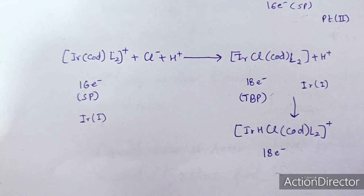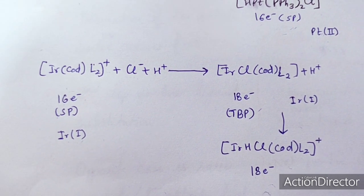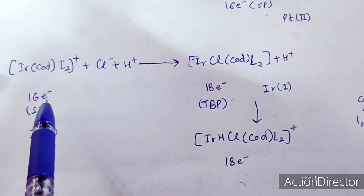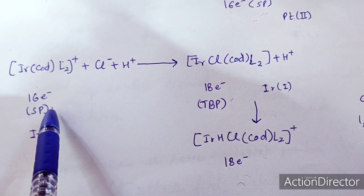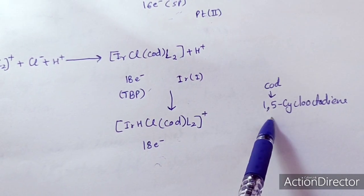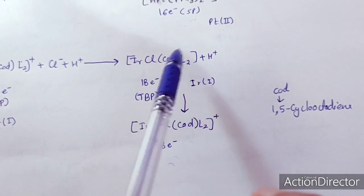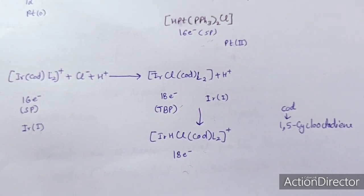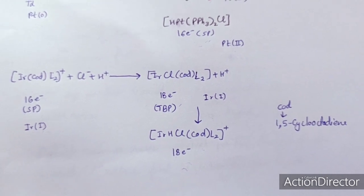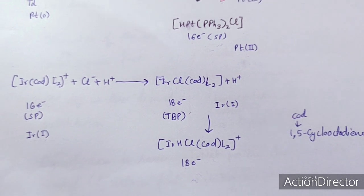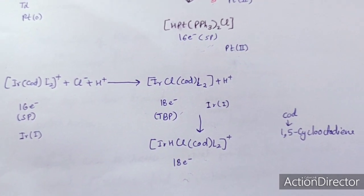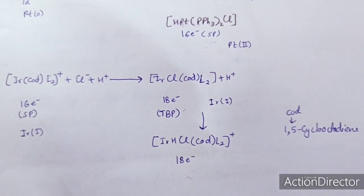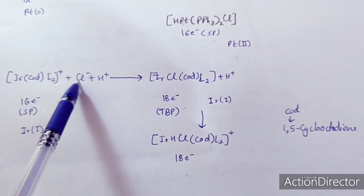Ionic mechanism can occur either via oxidation then addition, or via addition then oxidation. It depends on the type of metal complex. The COD ligand shown here is 1,5-cyclooctadiene. When alkenes, alkynes, or dienes are used as ligands, they are electron-withdrawing ligands. This is the special feature of reactions where Cl⁻ attacks first — the ligand is electron-withdrawing and the complex is positively charged.